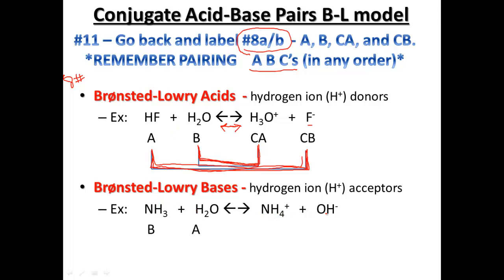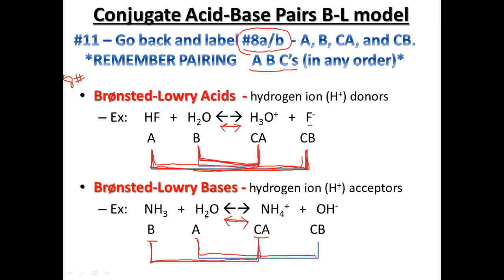NH3 plus H2O produces NH4+ and OH-. In this case, water is donating a hydrogen ion, so it's our acid. NH3 is accepting a hydrogen ion, so it's our base. Once we get to the opposite side of the reaction, NH4+ could donate a hydrogen back, so it becomes our conjugate acid. Hydroxide can accept that hydrogen to go back and become water again, making it our conjugate base. Our pairs: ammonia and water as base and acid, and NH4+ and OH- as conjugate acid and conjugate base.